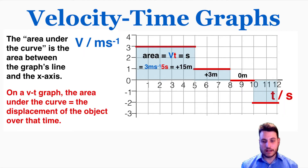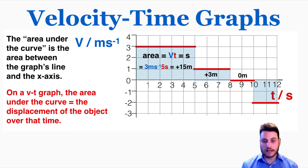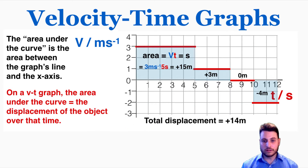In the last part, this area is actually below the x-axis — it's still between the line and the x-axis, just negative. So this is actually going to be a negative displacement because the velocity is negative: negative 2 times 2 equals negative 4 meters. So the total displacement is 15 plus 3 plus 0 minus 4, which equals 14 meters. We can find the displacement of the object from the area under the curve of a velocity-time graph.